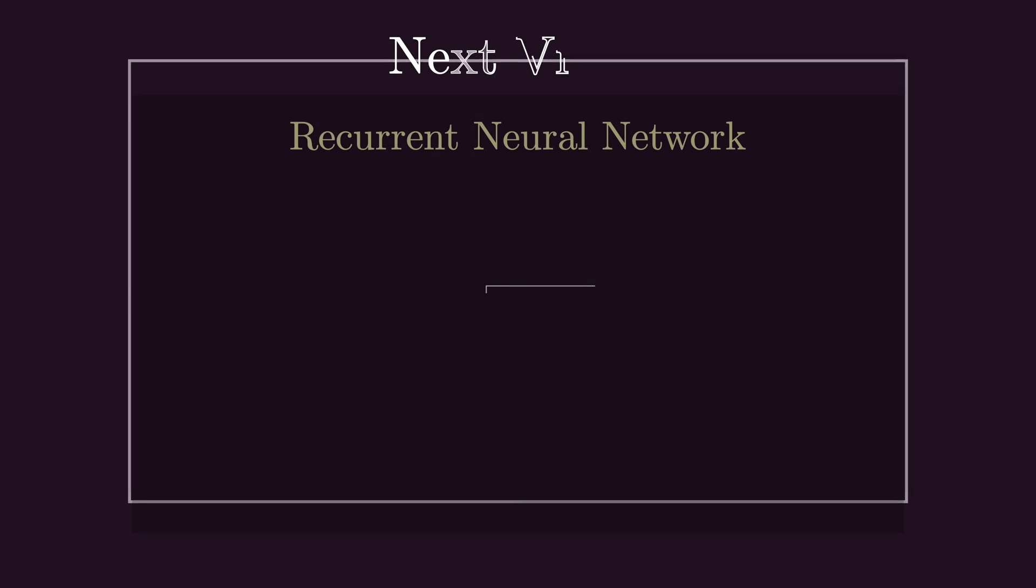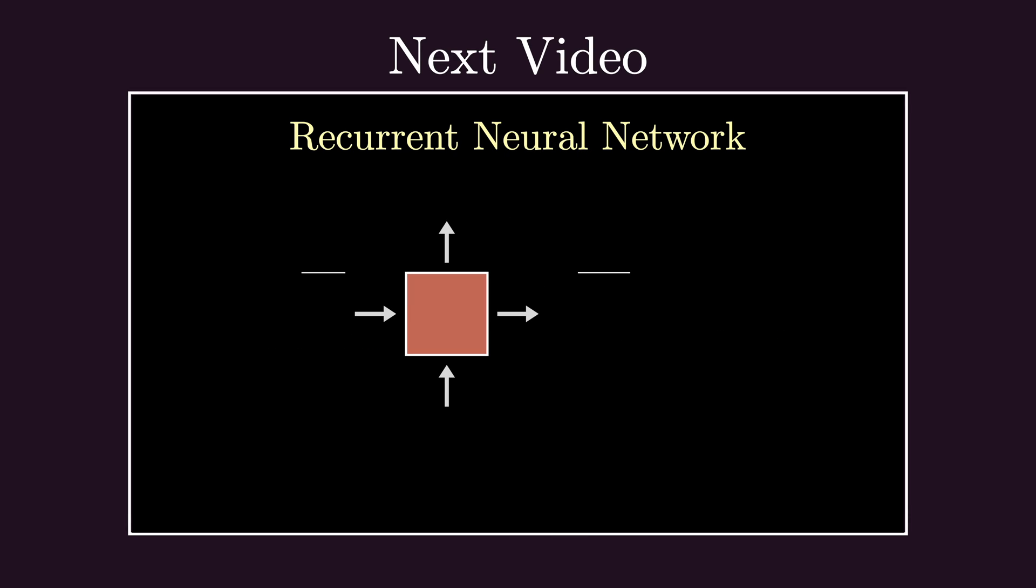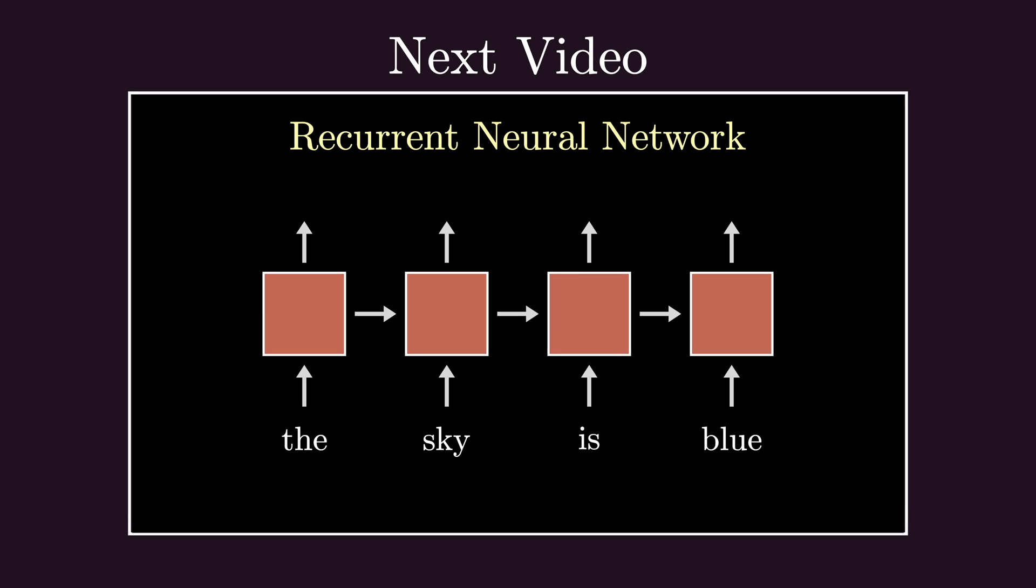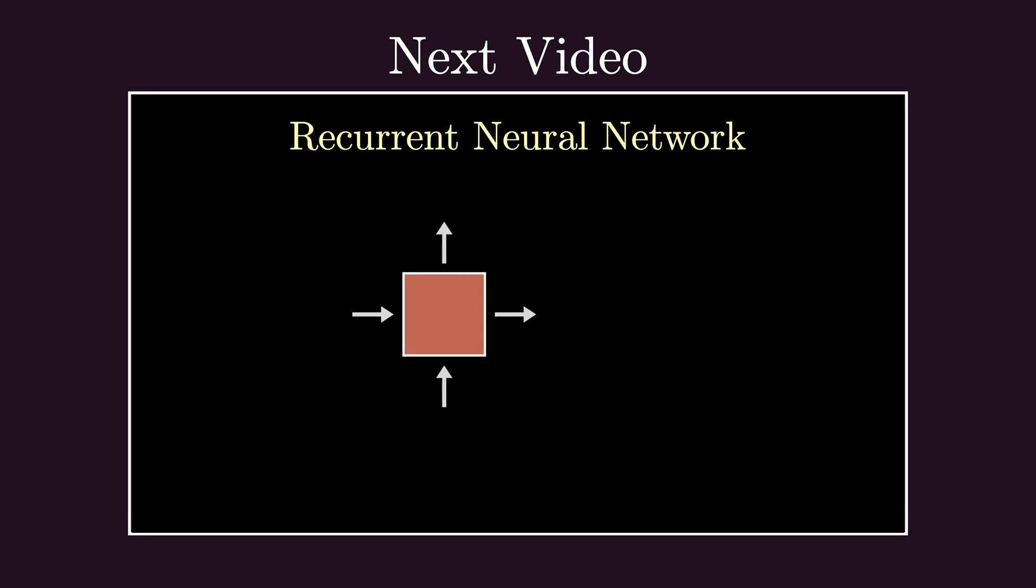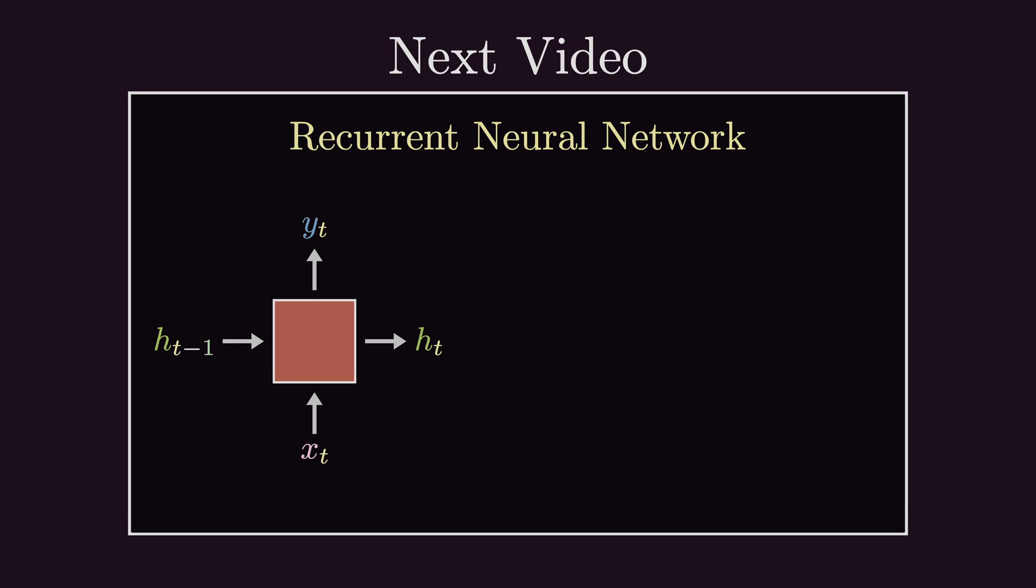In the next video we'll cover how neural networks drastically improved our language modeling capabilities. Up until 2017, variants of the model we'll cover in the next video - the recurrent neural network - were used by Google Translate to translate between languages. And well, it works pretty well. So join me on the next video and I'll tell you all about it.